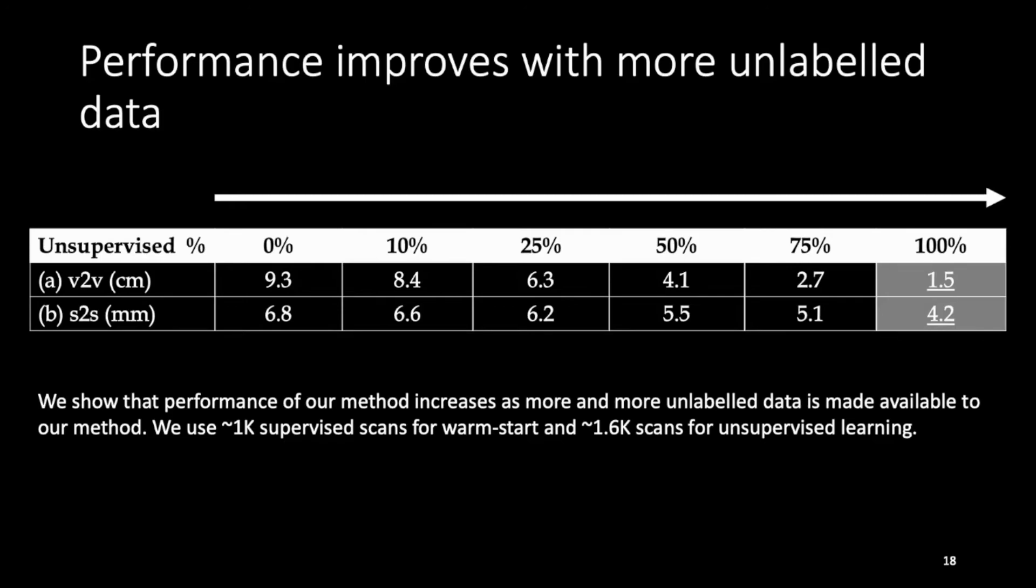One of the key advantages of LoopReg is that our formulation supports self-supervised training. We show that performance of our method increases as more and more unlabeled data is made available. We go from 9.3 cm vertex to vertex error when no supervised data is used to just 1.5 cm when roughly 1600 unlabeled scans were used with LoopReg.